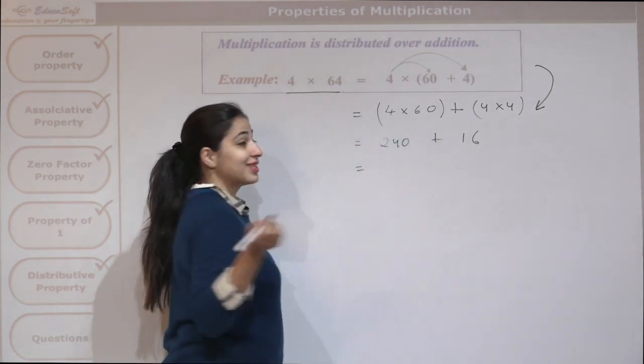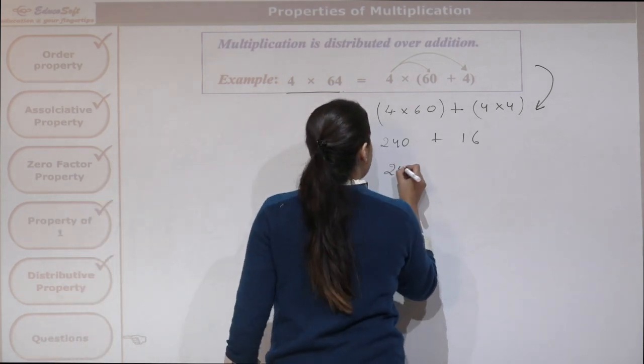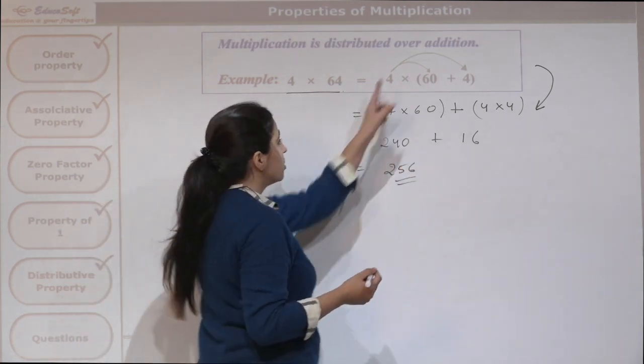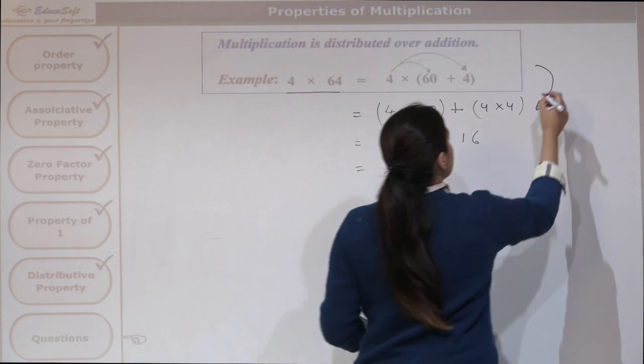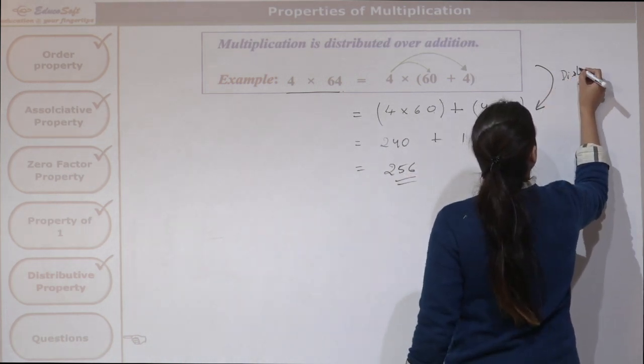So let us add the two. What do we get? We get 256, our final answer. This is our distributive property.